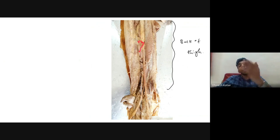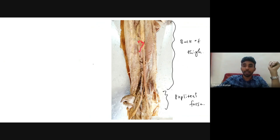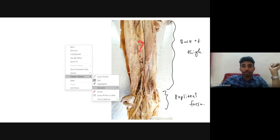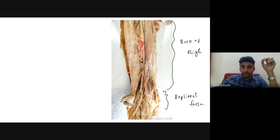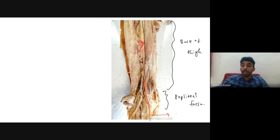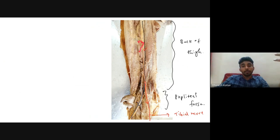Just behind the knee joint we have the popliteal fossa — a diamond-shaped depression. As the sciatic nerve moves downwards, at the superior angle of the popliteal fossa it divides into two terminal branches. One nerve moves vertically downwards — that is the tibial (TBL) nerve. The other moves downwards and laterally — that is the common peroneal nerve.